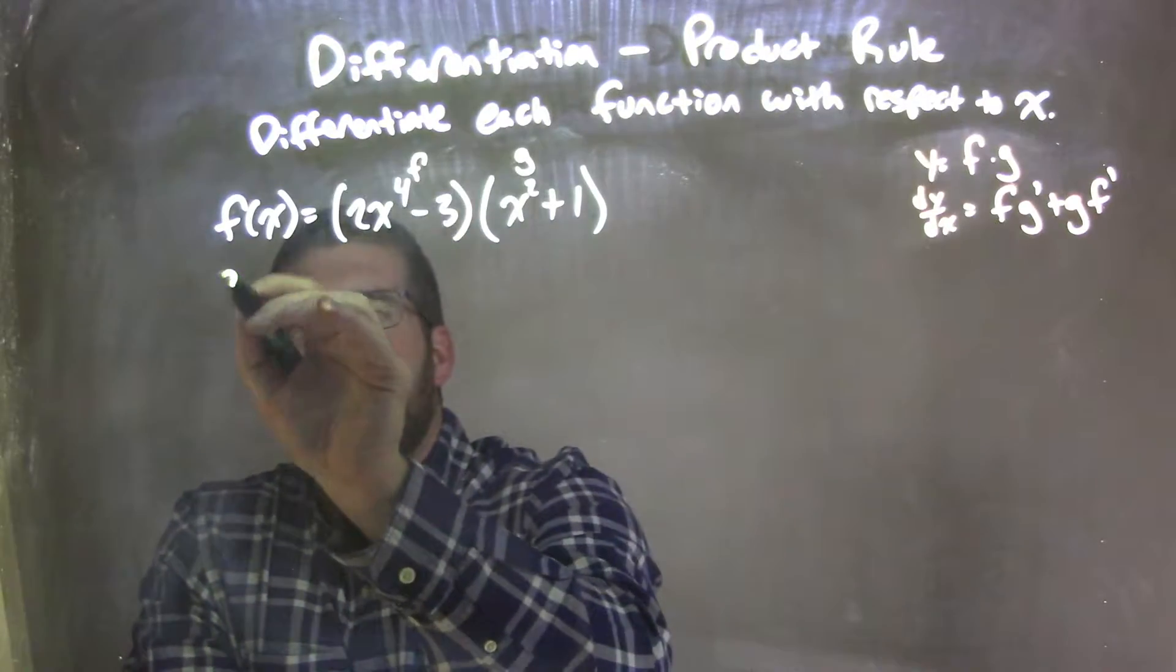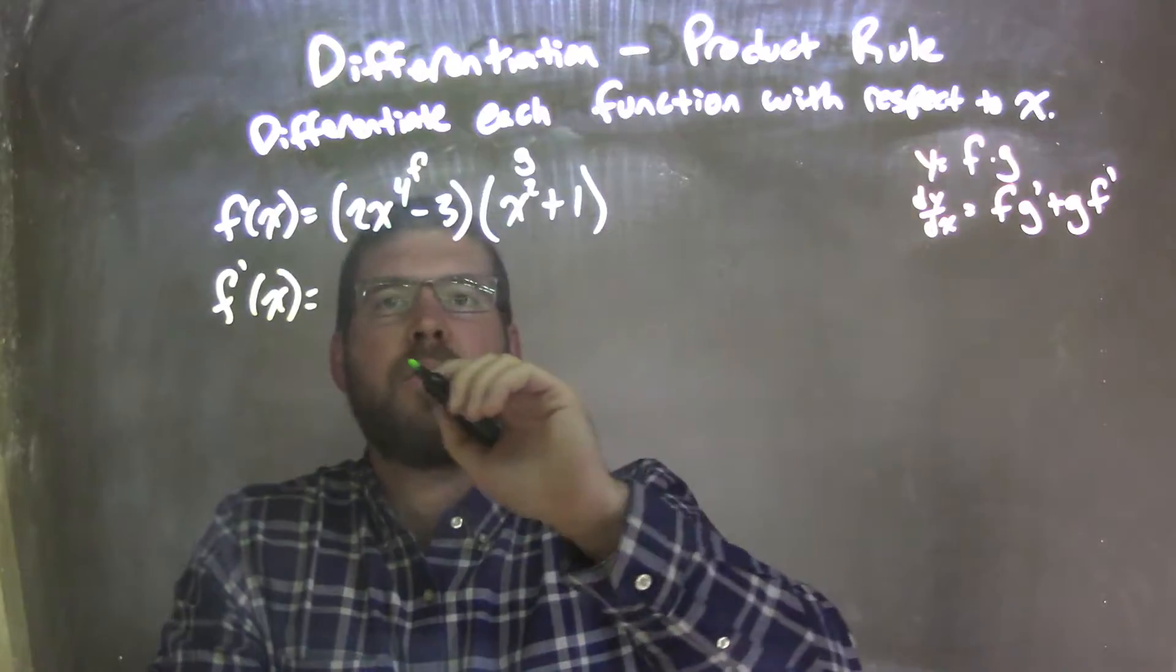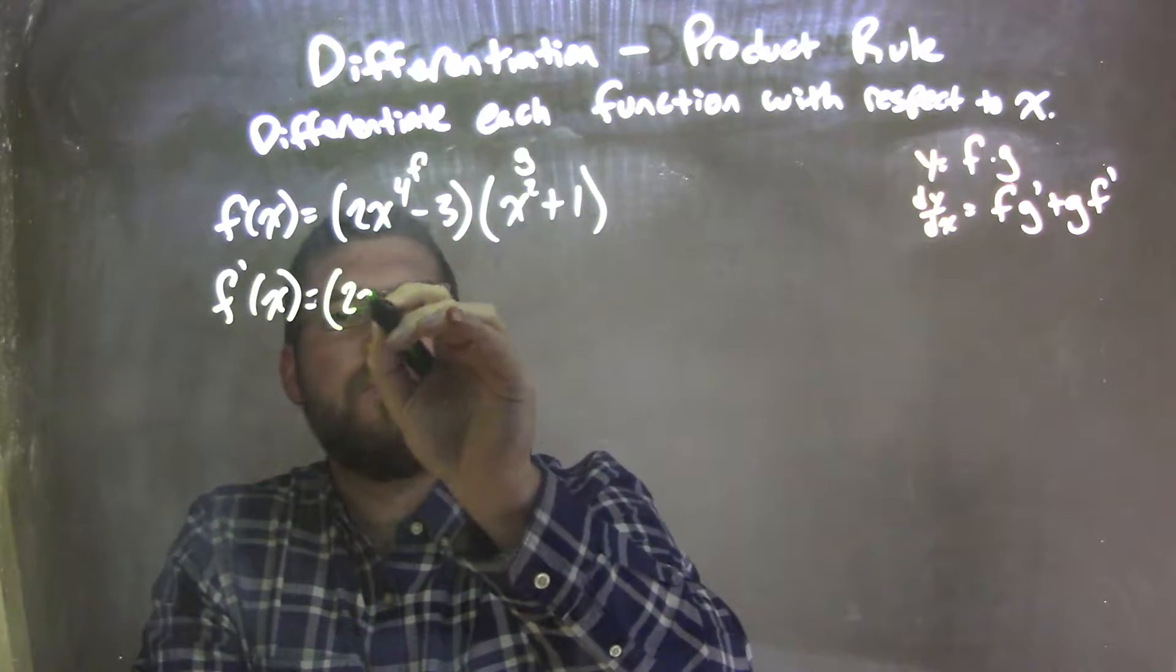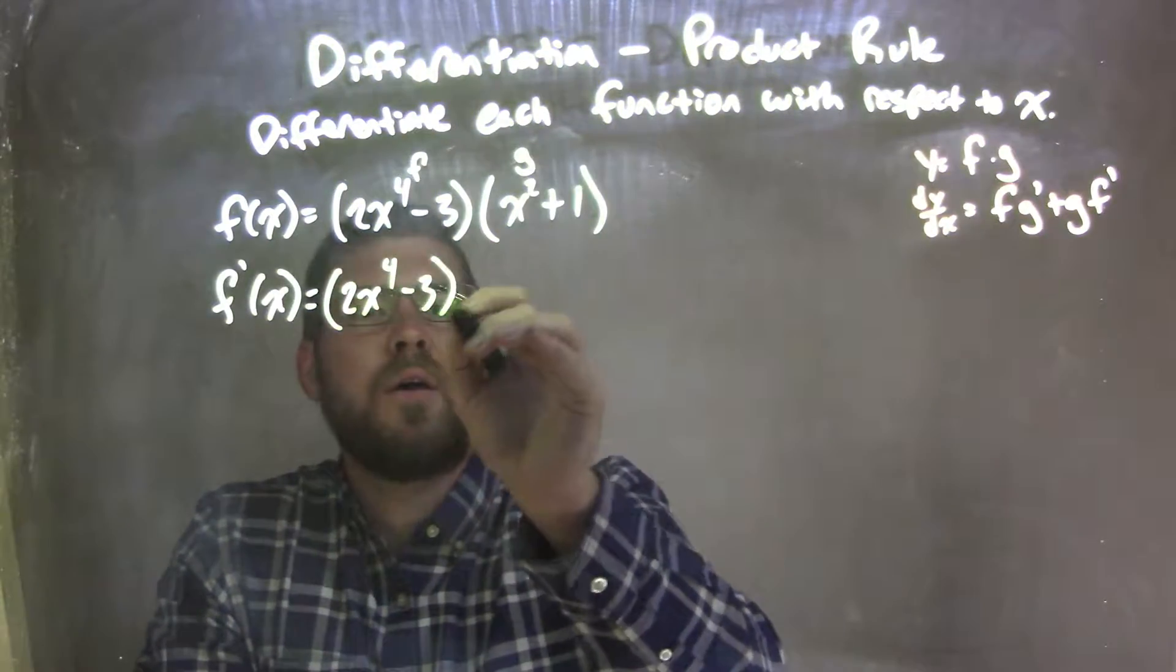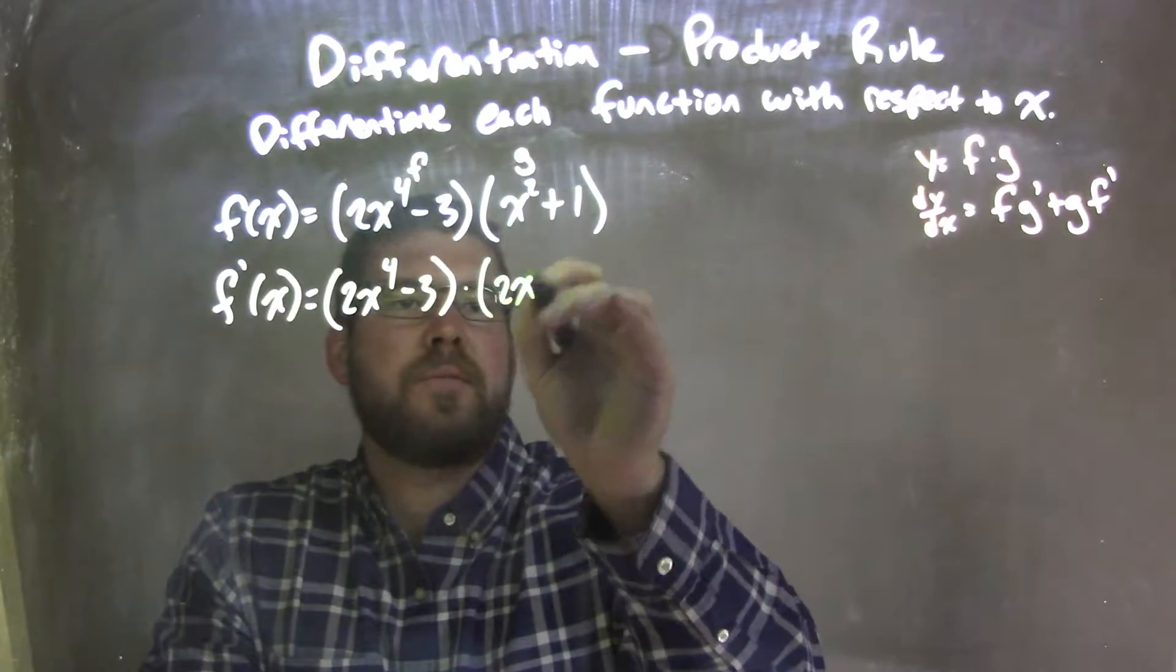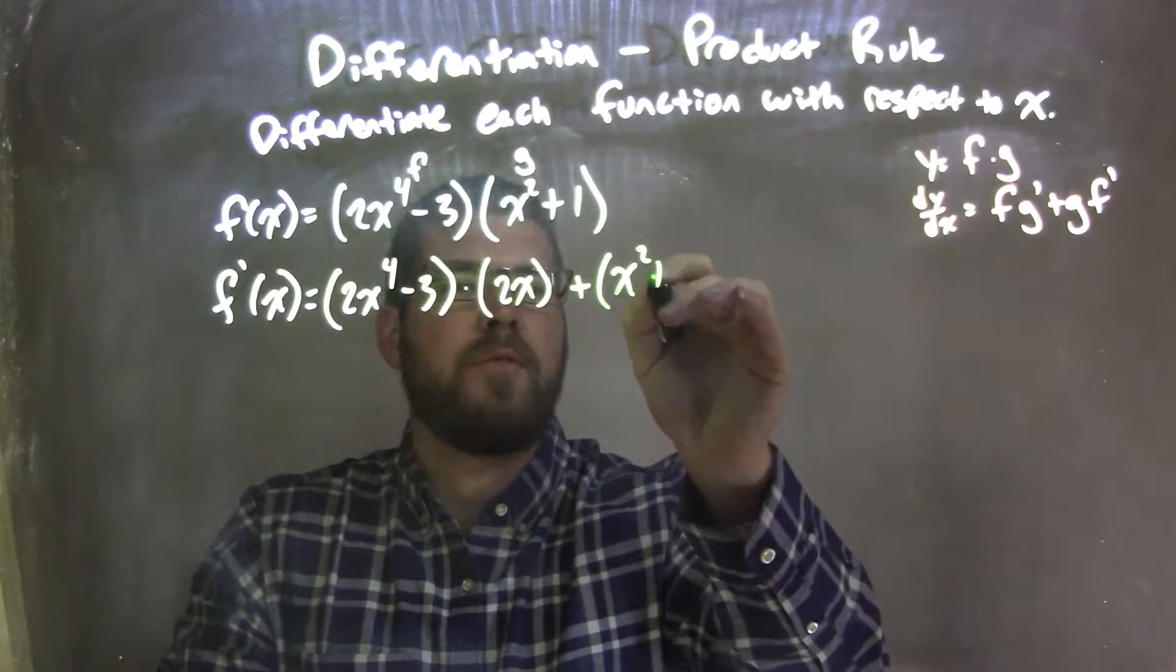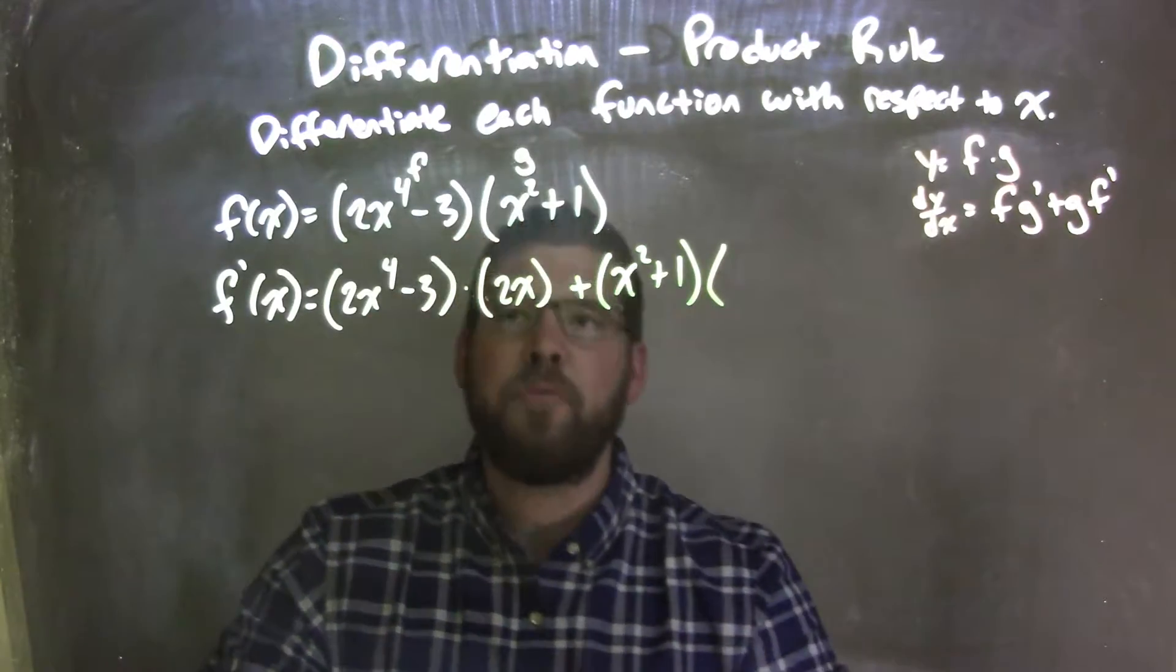So when I take the derivative, f prime of x of that, I'm going to apply the product rule. The product rule states f, which is 2x to the 4th minus 3, times g prime, which is 2x, derivative of our function g, plus g, which is x squared plus 1, times f prime.